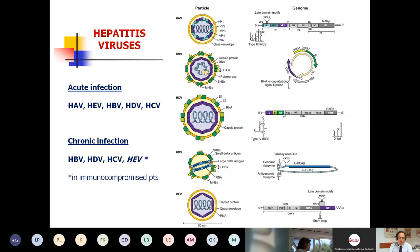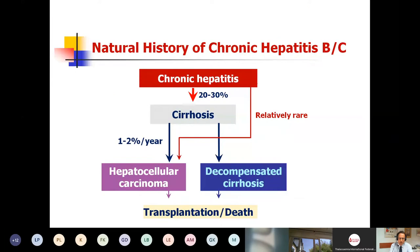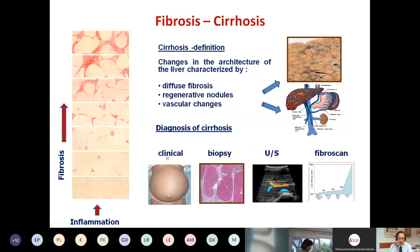Professor Dusseiko very nicely covered the topic of chronic hepatitis. Chronic hepatitis may lead to cirrhosis in a substantial number of patients, who may then progress to decompensation, hepatocellular carcinoma, and then to death or transplantation. Cirrhosis involves changes in architecture with diffuse fibrosis, regenerative nodules, and vascular changes leading to portal hypertension. Diagnosis can be made clinically, by biopsy, by ultrasound and triplex of the portal vein and collaterals, and also by FibroScan.